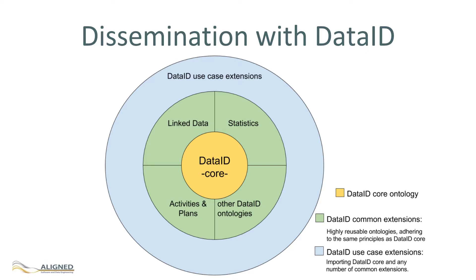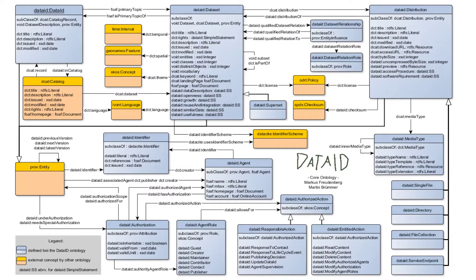The multi-layered metadata system Data ID provides detailed descriptions of datasets and their manifestations, as well as relations to agents such as persons or organizations in regard to their rights and responsibilities. It incorporates well-established vocabularies such as PROF or DCAT and was accepted as an input document for the ongoing W3C Dataset Exchange Working Group.